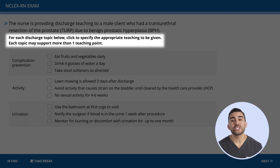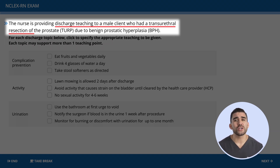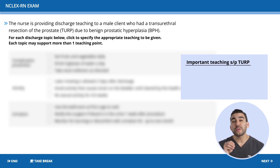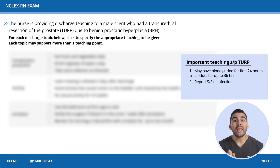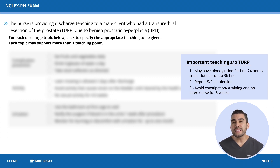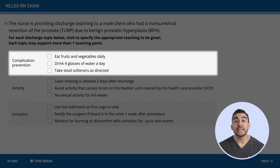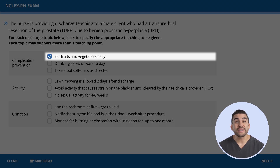This question asks: for each discharge topic below, click to specify the appropriate teaching. The problem is discharge teaching after a TURP due to benign prostatic hyperplasia (BPH). A TURP sends a large instrument down the urethra to grind up the prostate and suction it out. The client will have bloody urine for the first 24 hours and small clots up to 36 hours after. We must watch for signs of infection, avoid constipation and straining, and have no intercourse for about six weeks. For complication prevention: eating fruits and vegetables daily is correct — it promotes GI motility and decreases constipation risk, reducing pelvic pressure.